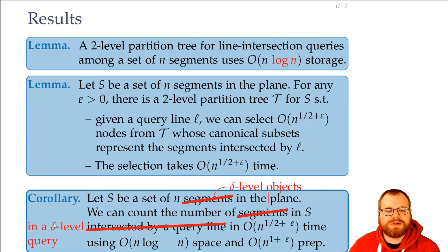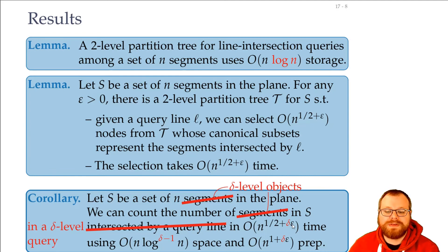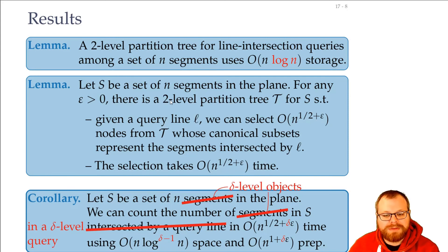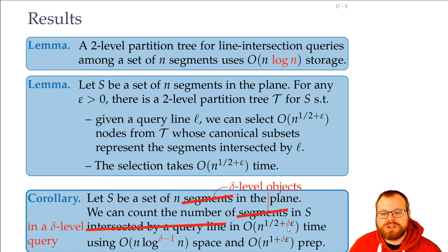We can have a delta level structure. Now things change a little bit. Now we get a multiplicative factor on this epsilon that depends on the number of levels. If the number of levels gets higher, we can just use a smaller epsilon and still get the same result. But as soon as this is not a constant epsilon, that changes the bound.